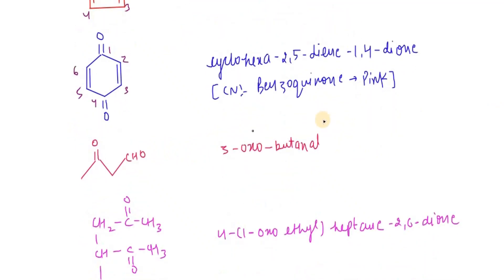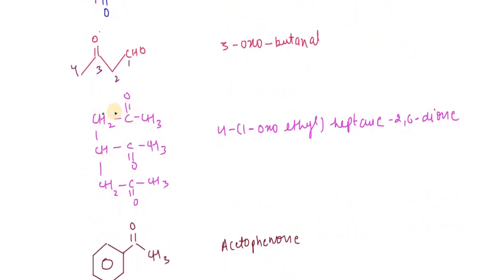3-oxobutanal. When we have both ketone and aldehyde, the aldehyde is more prior than ketone, so it is numbered one, two, three, four: 3-oxobutanal.